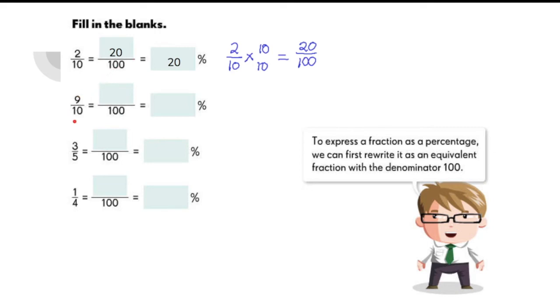9 tenths. Let's write this as a fraction with a denominator of 100. Here, you just need to multiply it by 10 and 10. So 9 times 10 is 90, 10 times 10 is over 100. So 9 tenths is equal to 90 over 100 or 90%.